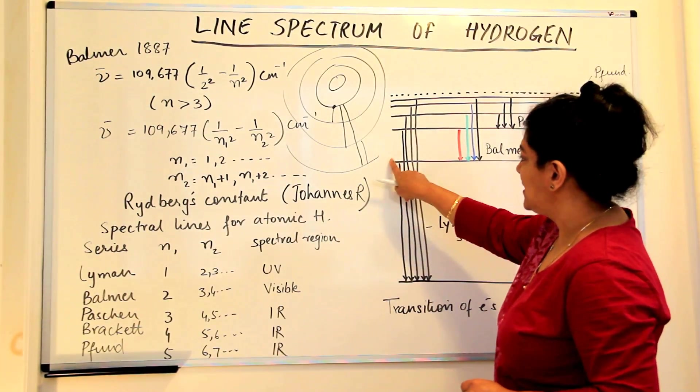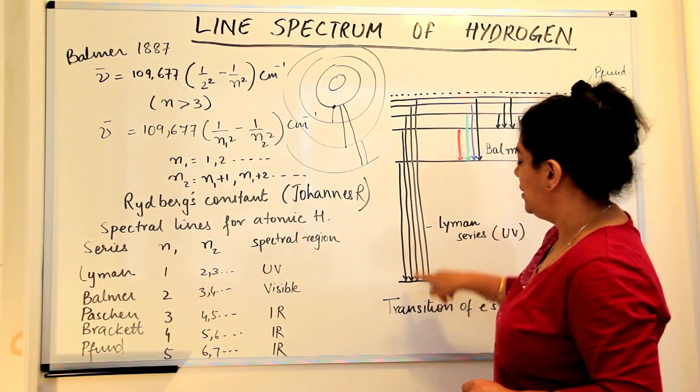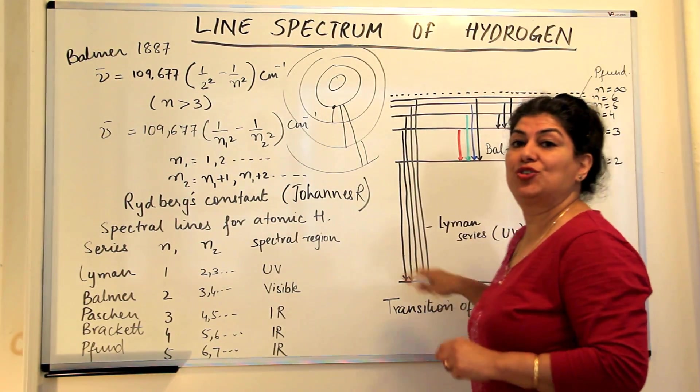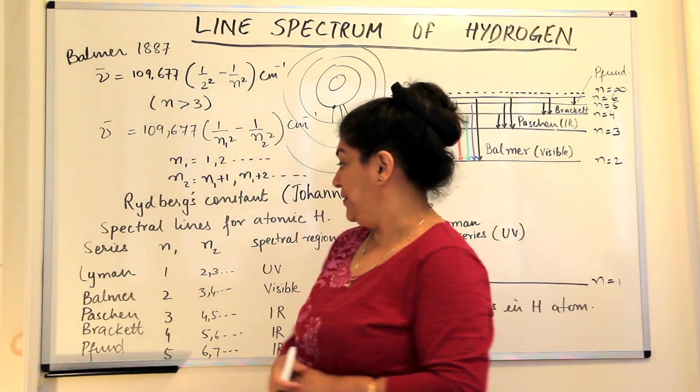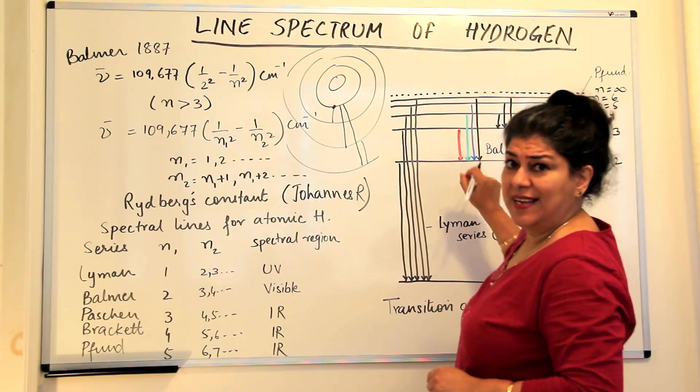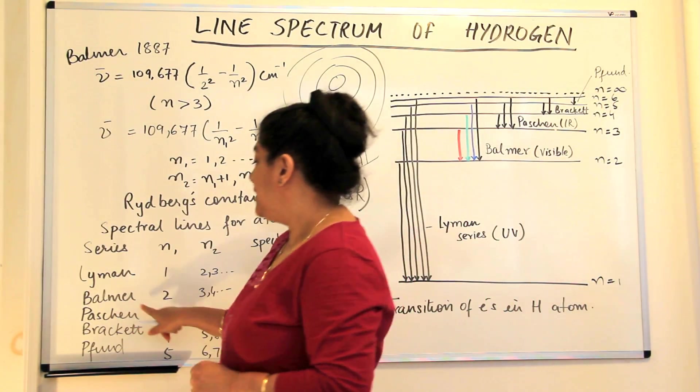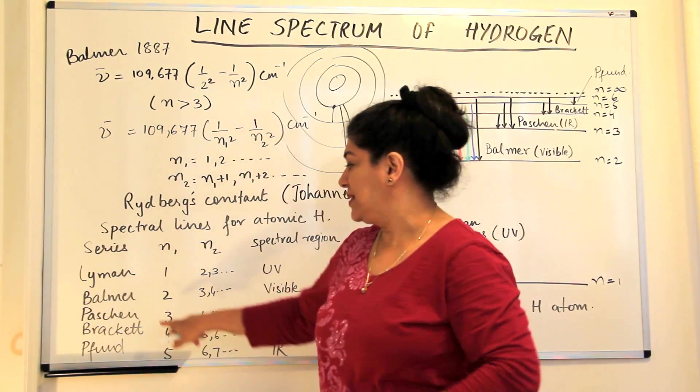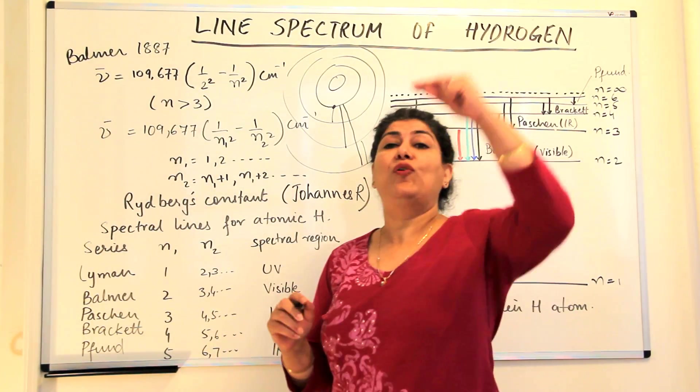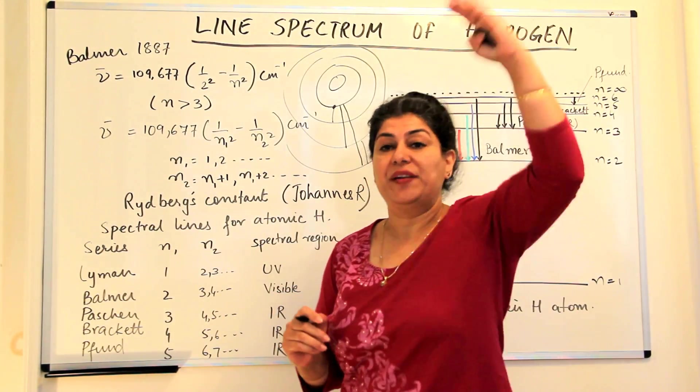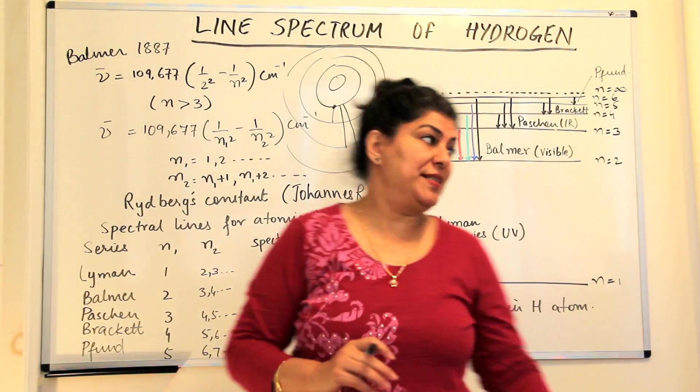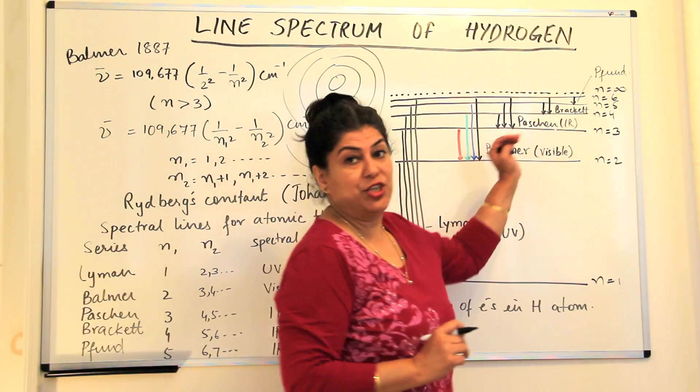When an electron goes from second to first, third to first, fourth to first, fifth to first, and sixth to first, you get the Lyman series. The Balmer series is when electrons return to the second level. The third is the Paschen series. The Paschen series is where the level is the third and the electrons are in the fourth, fifth, sixth levels, and when they return, they form the Paschen series. These are in the infrared region.